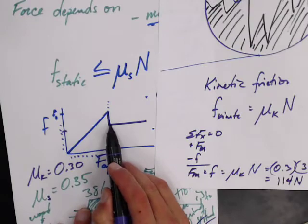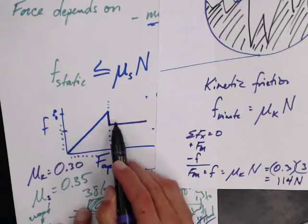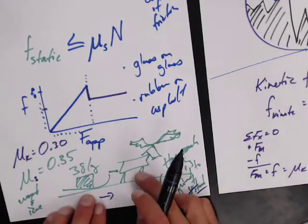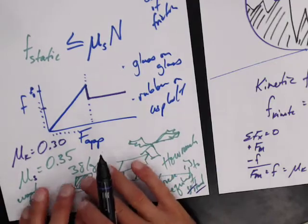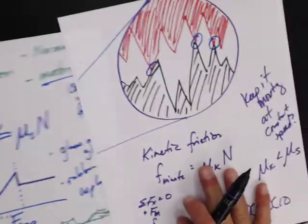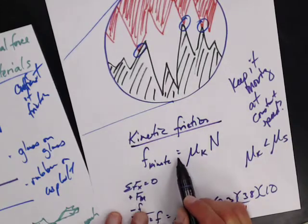Now I'm required less force to pull to keep it moving than it does to get it moving. Once it slides, you're doing okay. So that's kinetic friction. That's a constant.